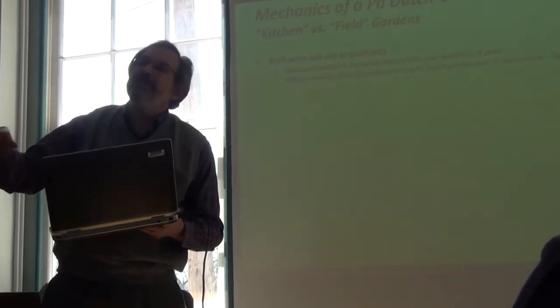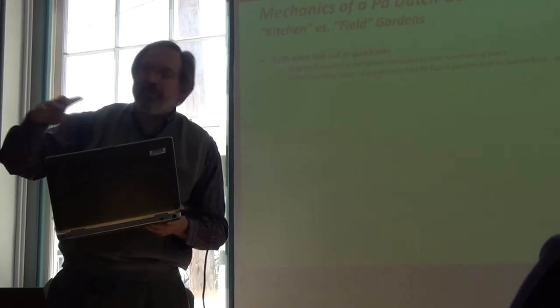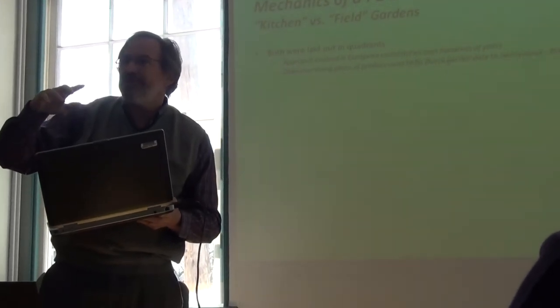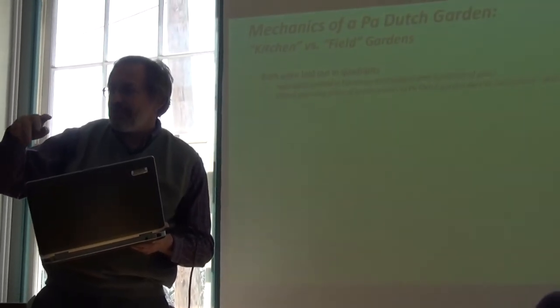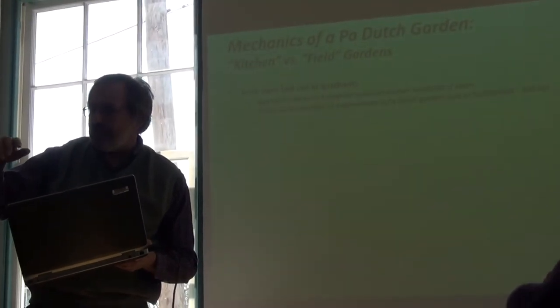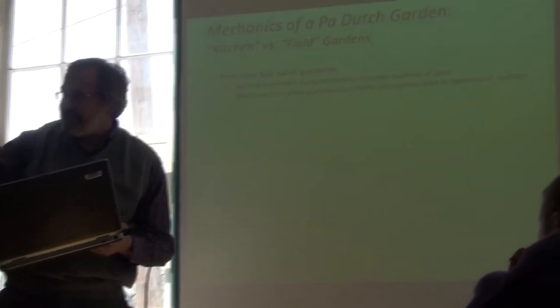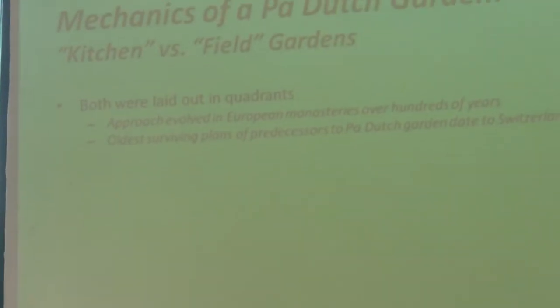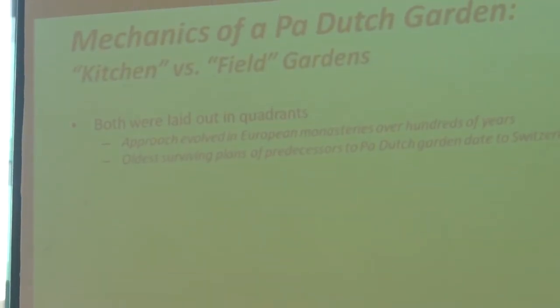At least in Slatington in that area they'll take a field, plant probably soybeans first. The nitrogen from the soybeans is good for the corn so the corn goes in next and then the winter wheat follows that on a three-year rotation.